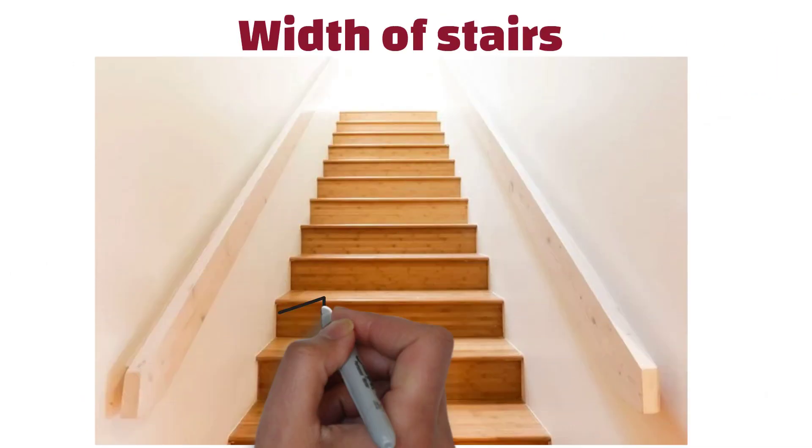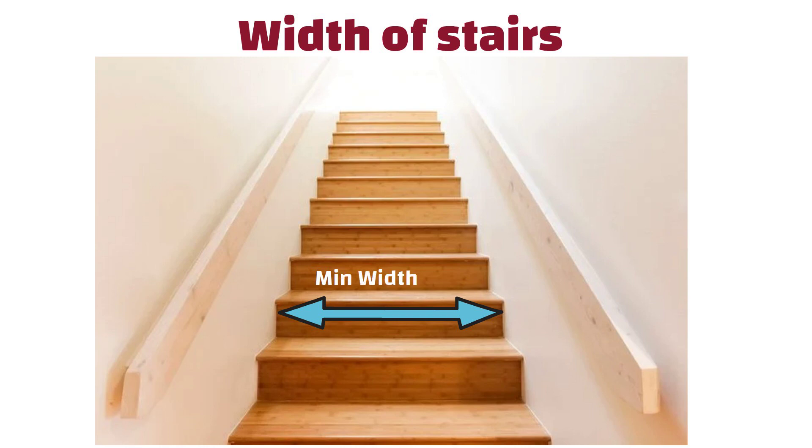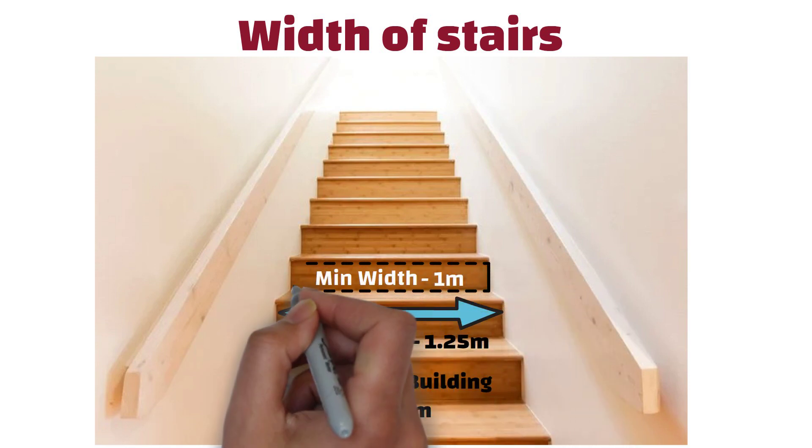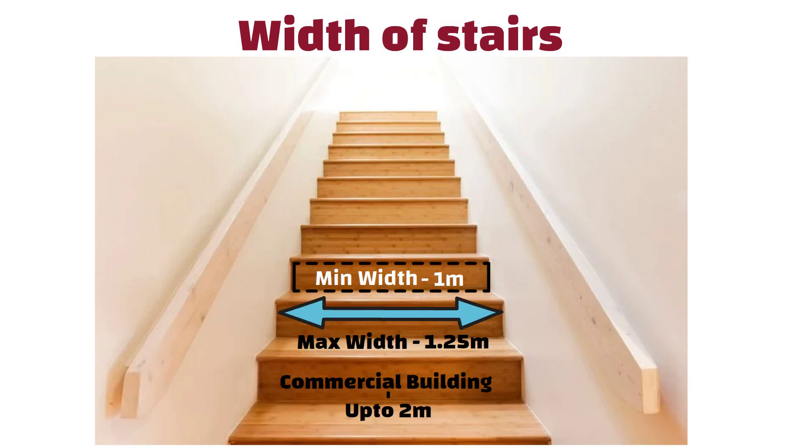5. Width of Stairs. The minimum width of stairs in residential buildings should not be less than 1 meter, i.e. 3.28 feet. The maximum width of stairs is generally recommended to be around 1.25 meters, i.e. 4.1 feet. For commercial building, it can go up to 2 meters, i.e. 6.5 feet. If the stairs are too small, it can be hard for people to get out quickly and safely in an emergency.